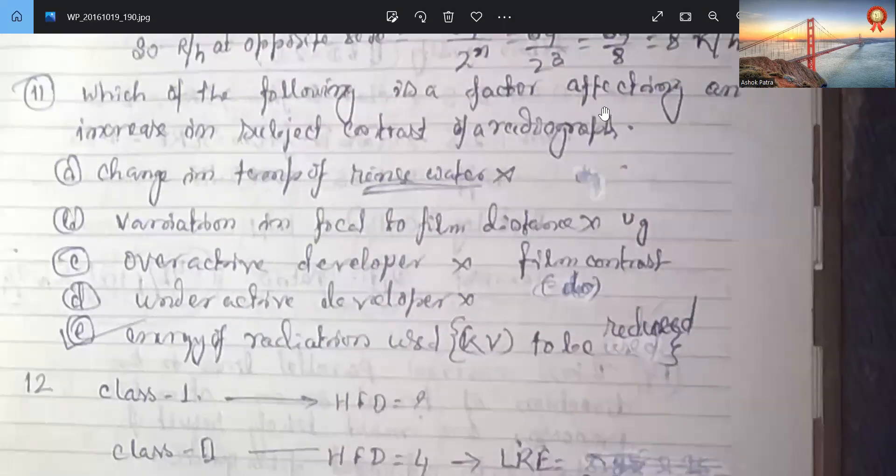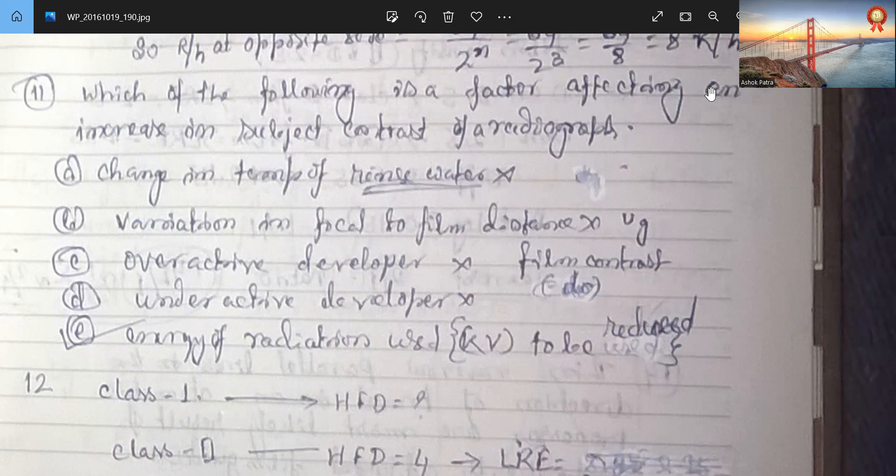Which of the following is a factor affecting an increase in subject contrast for radiographs? Change in temperature. Variation of focal film distance. Overactive developer. Underactive developer.